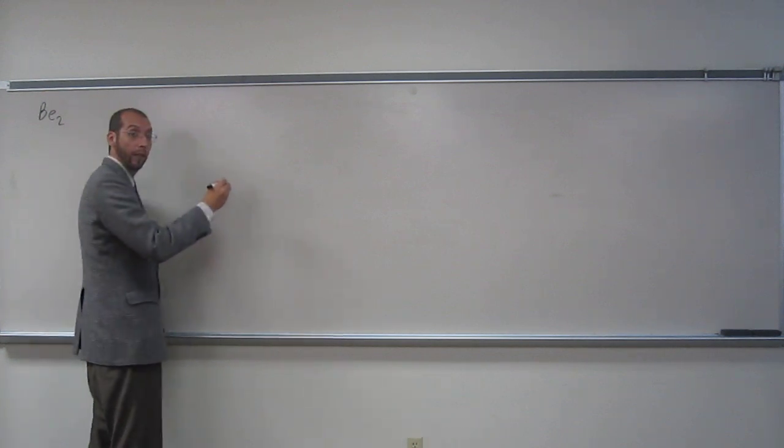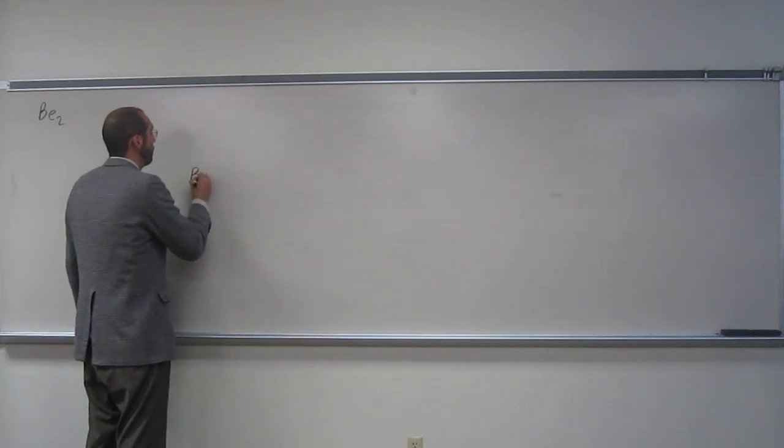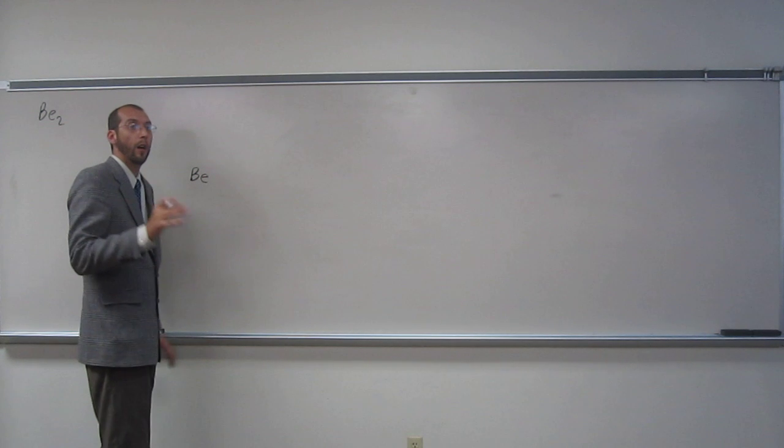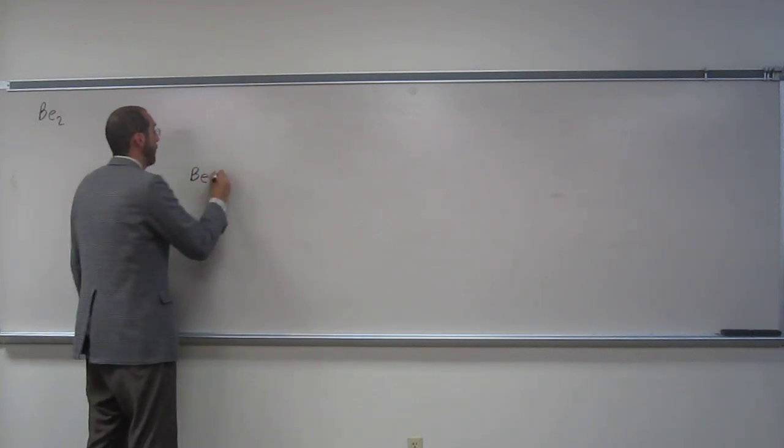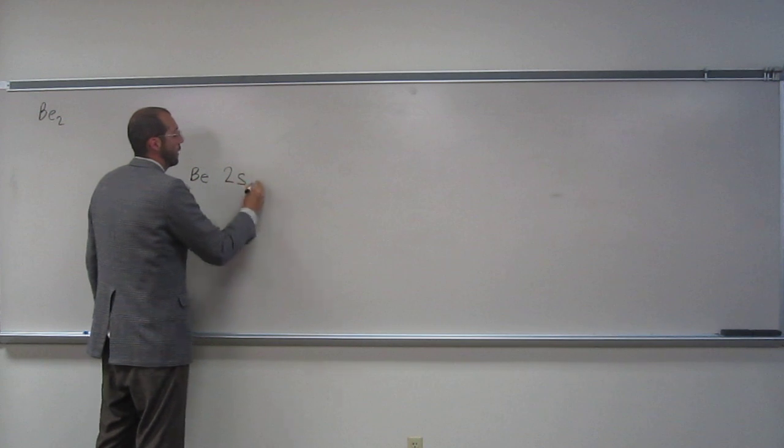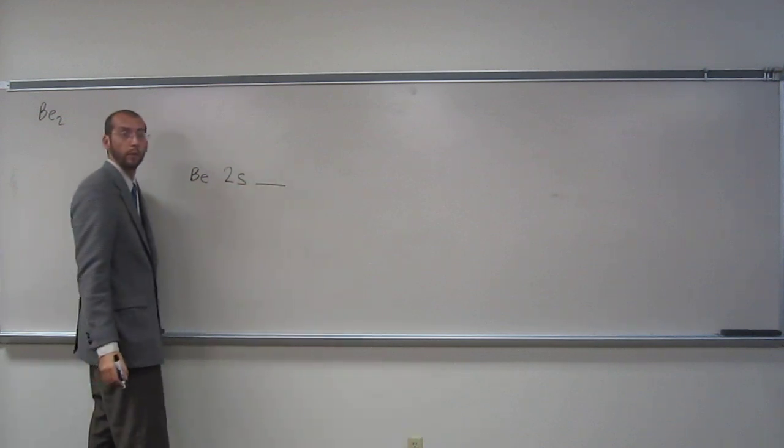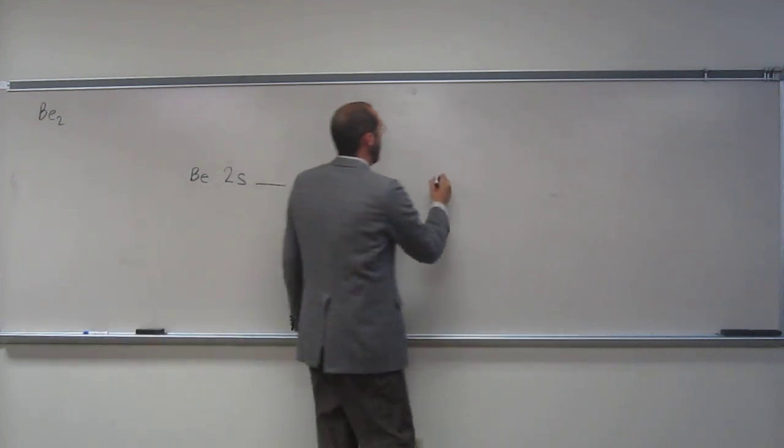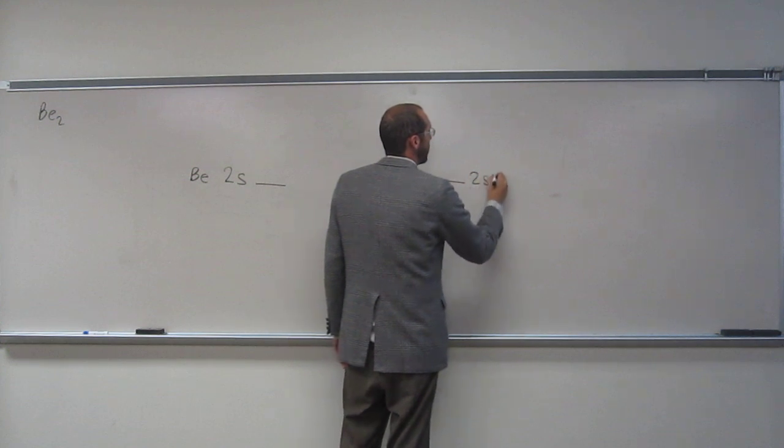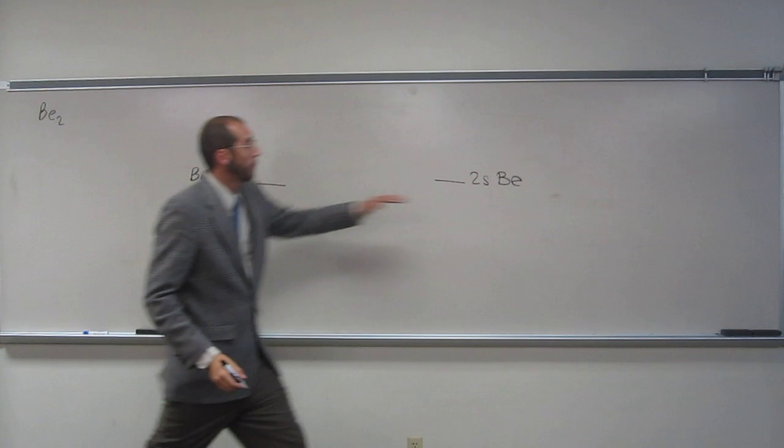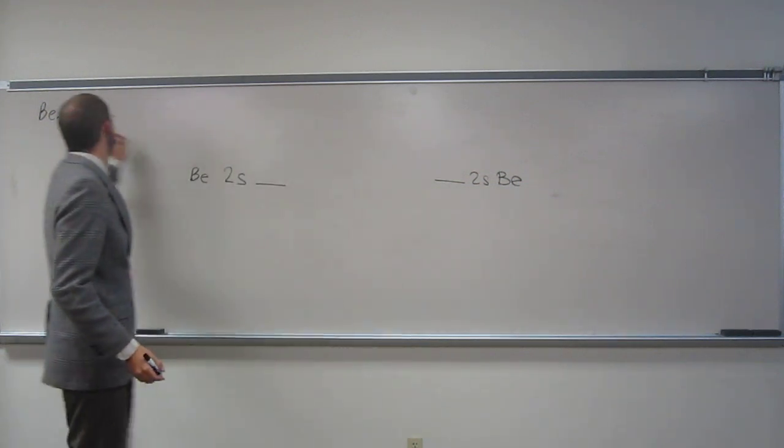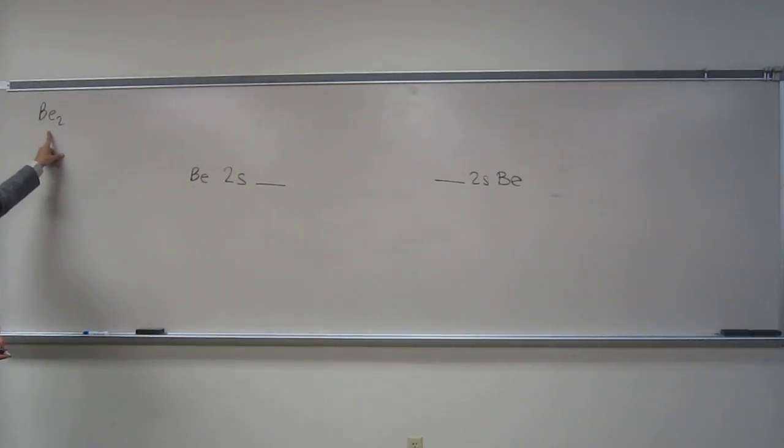Remember, we're only using the valence electrons. So Be's valence electrons are all stored in the 2S orbital, right? So we say 2S like that and we put the orbital. Go over to this side, put an orbital, 2S, Be. So Be plus Be makes Be₂. Is everybody okay with that?